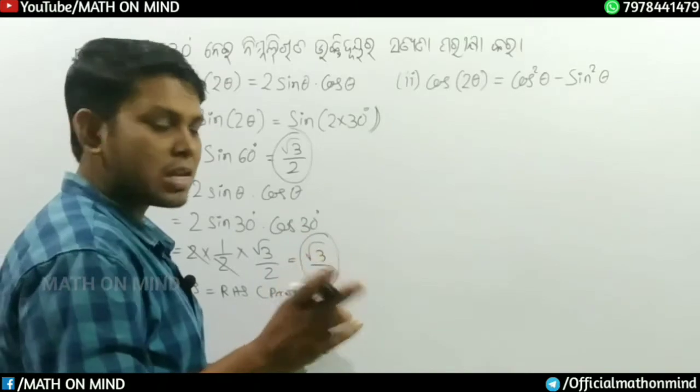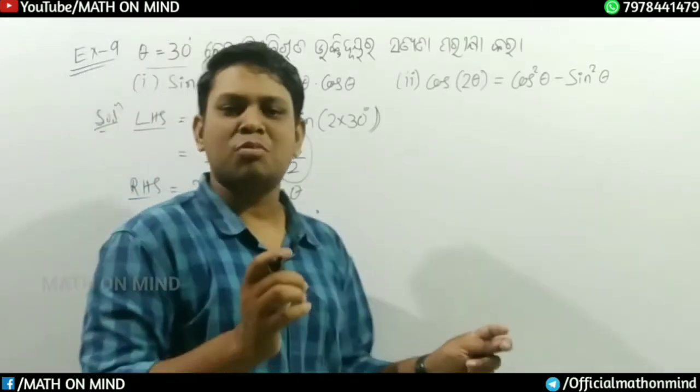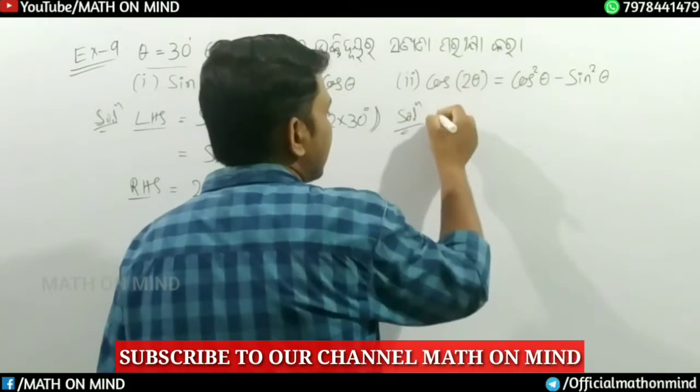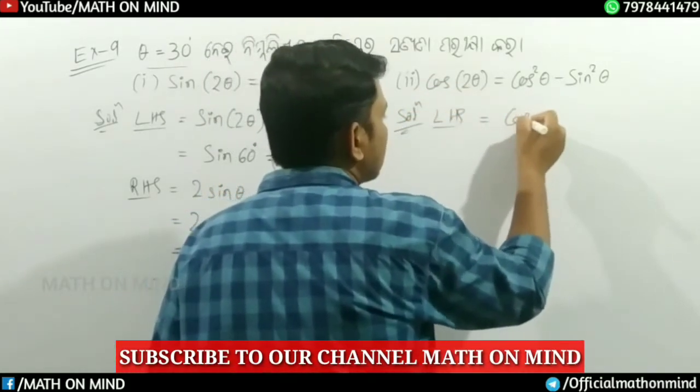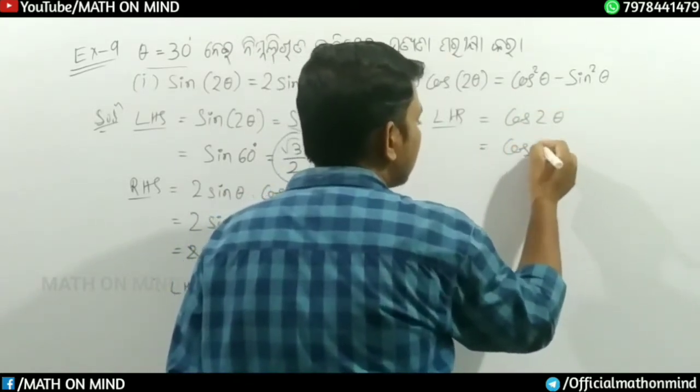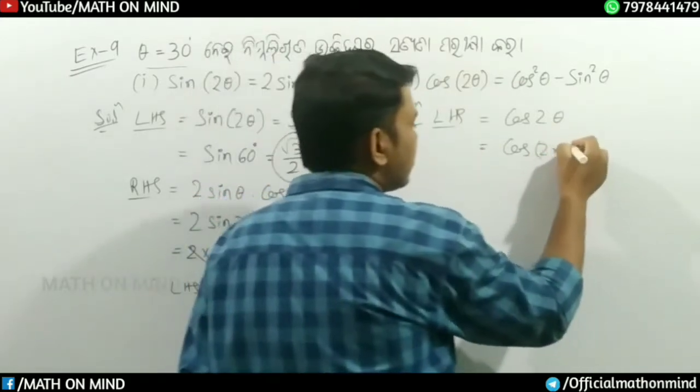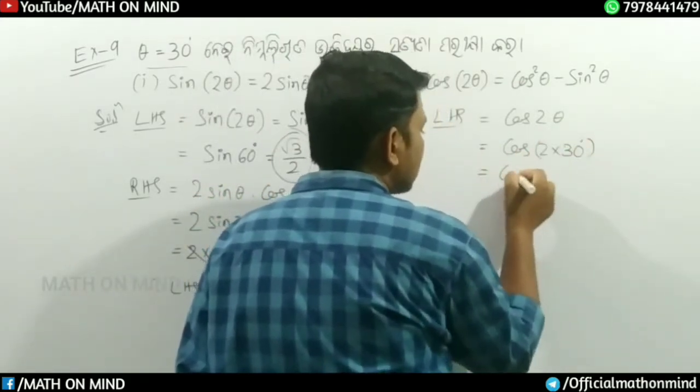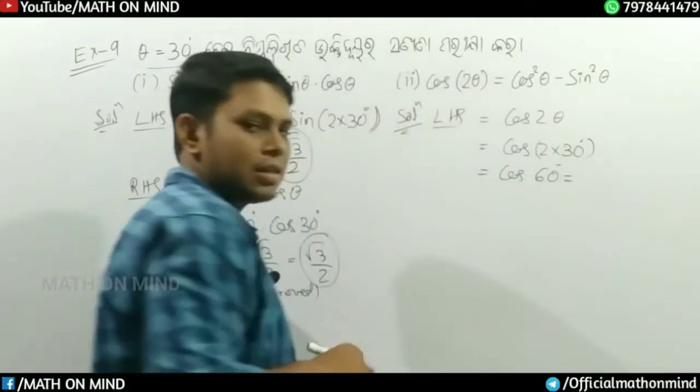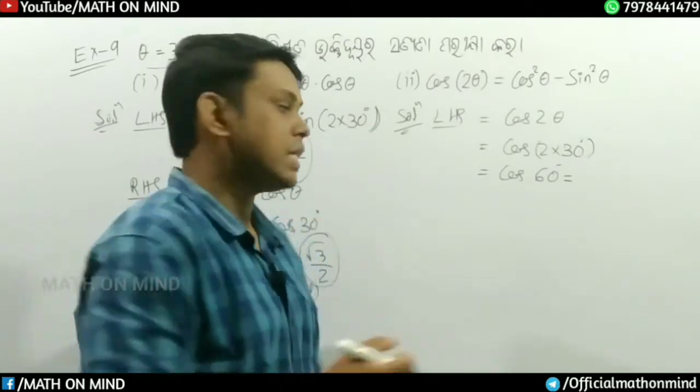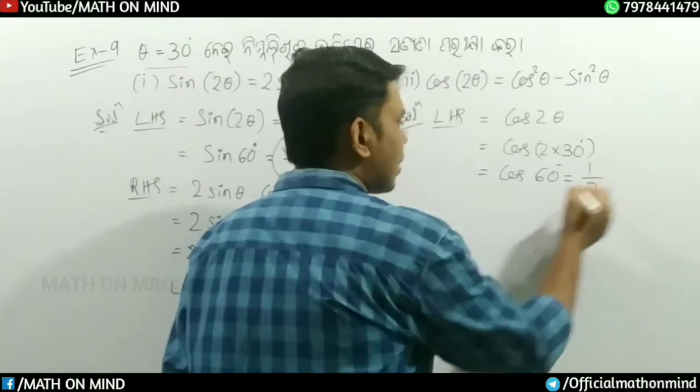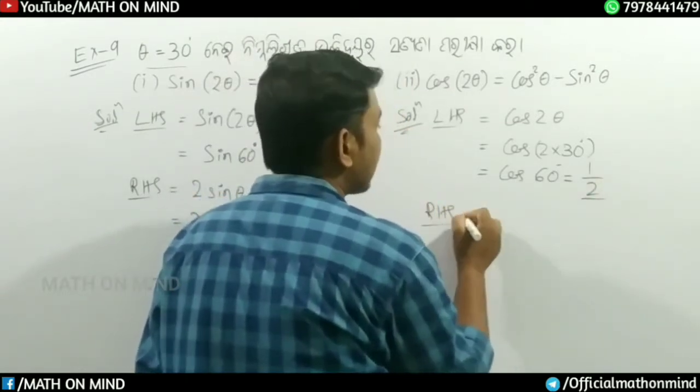Next question: cos 2θ. We have cos 2 into 30 degrees, which gives us cos 60 degree. The cos value is 1/2.